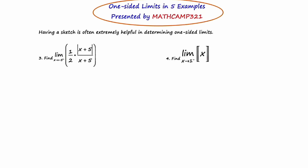Okay, number three. They're asking us to find the limit of the expression one half of absolute value of x plus five over x plus five, as x approaches negative five from the right. Just the notation alone is really kind of intimidating here, but hopefully through the first two examples that I've shown you, you have a little bit of an understanding of what's going on here.